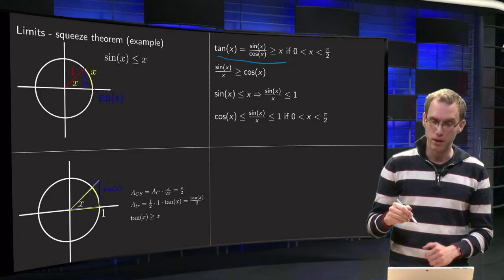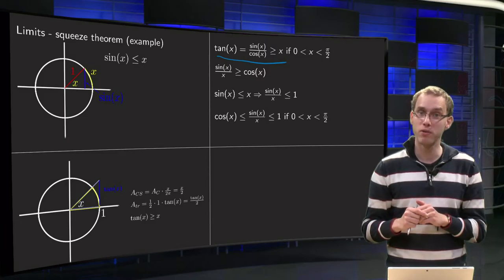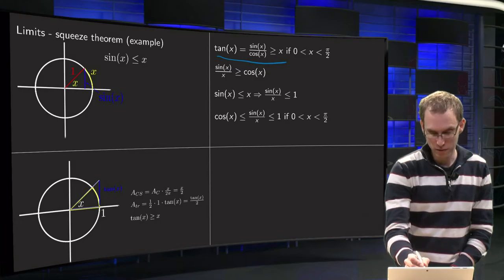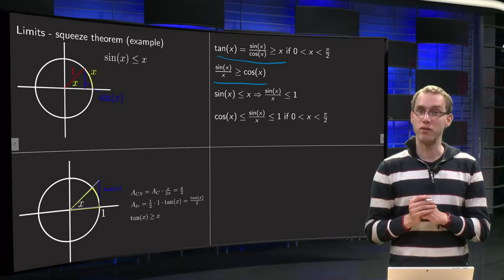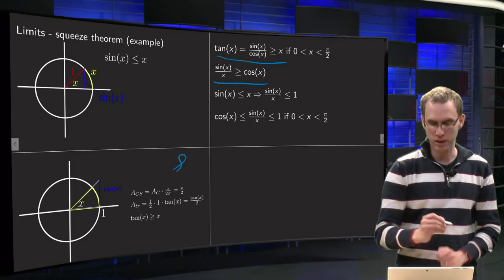So we can multiply the cosine of x to the right, so you have sine of x is bigger or equal than x times cosine x and divided by x, so you get sine of x over x is bigger or equal than cosine of x. That's the information we get from this picture over here.